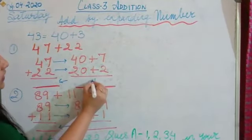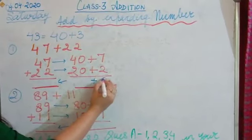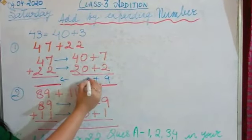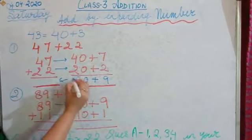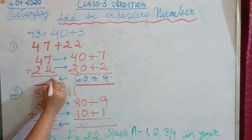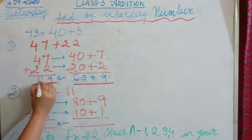So let's add, first I will put a plus sign. Now 7 plus 2, 9, 0, 4 plus 2, 6 and over here 7 plus 2, 9 and here 6.